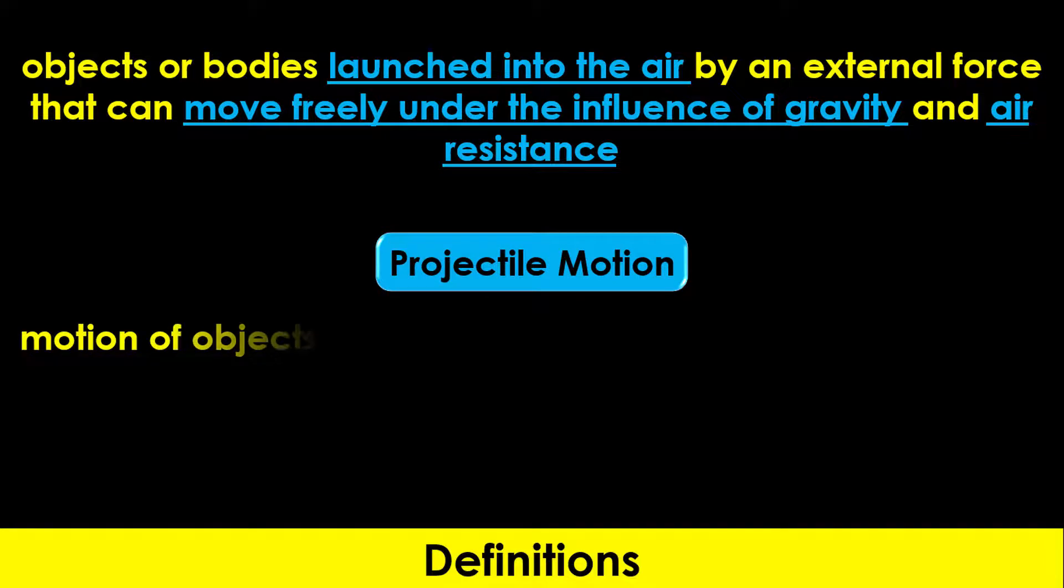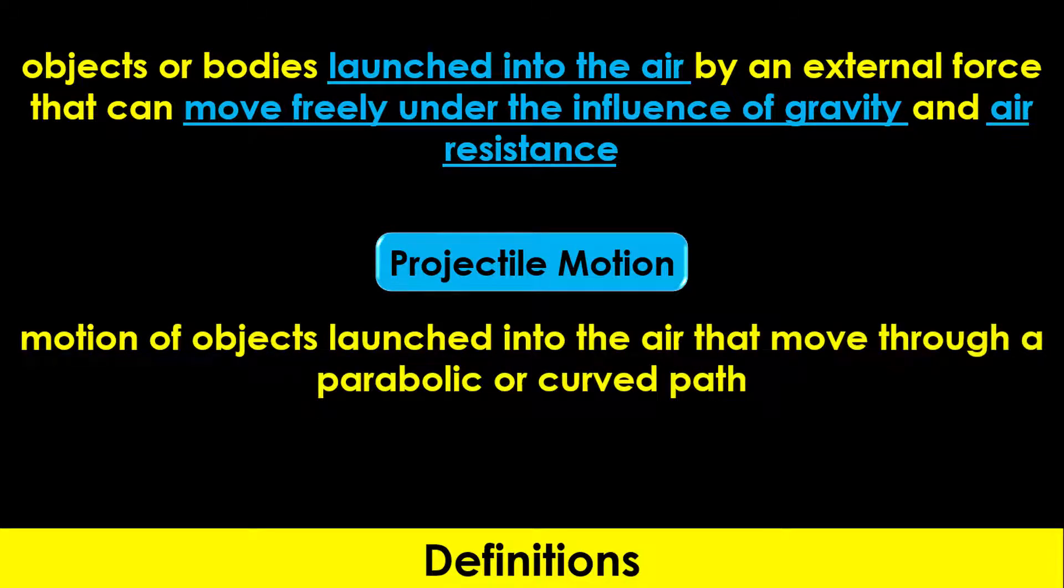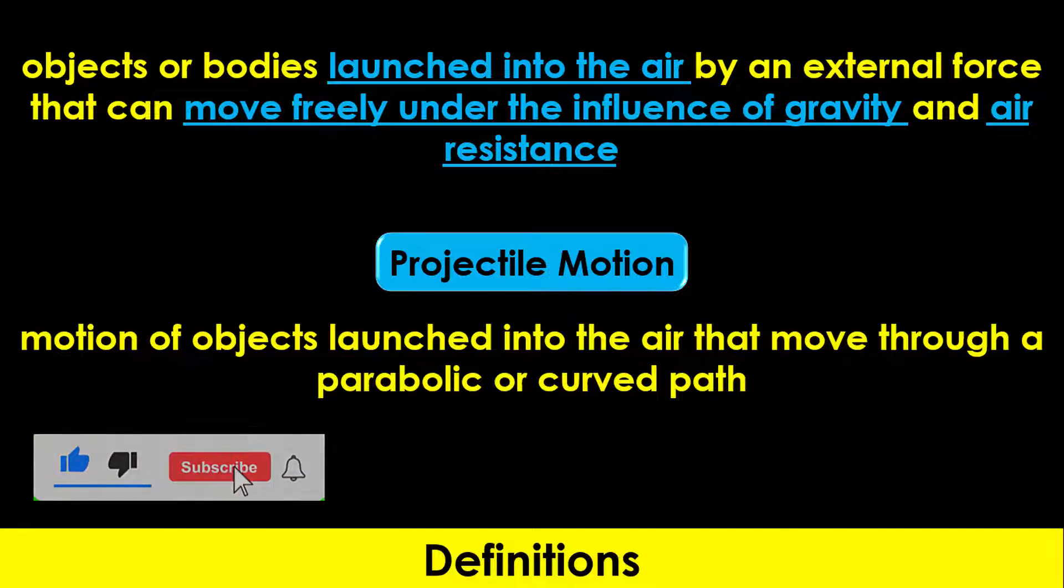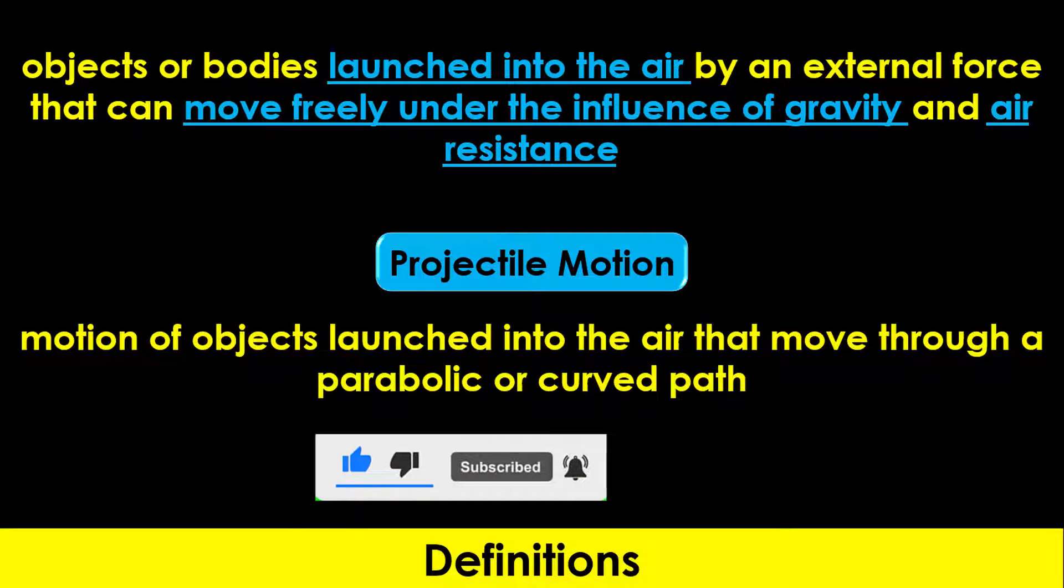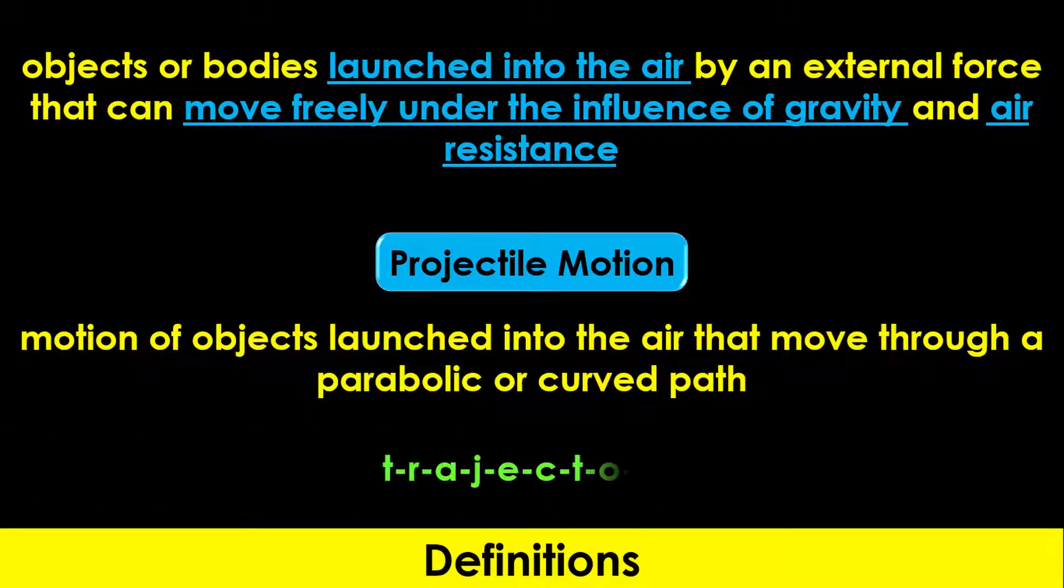Projectile motion, on the other hand, is the motion of objects launched into the air that move through a parabolic or curved path. The parabolic path moved by a projectile is known as a trajectory.